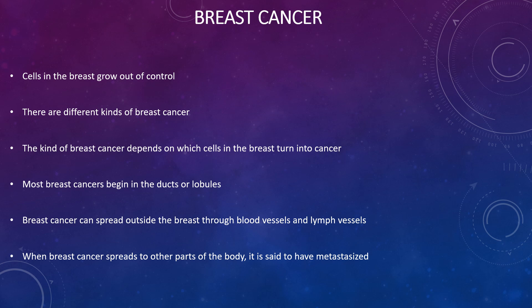Looking at breast cancer: cells in the breast grow out of control. There are different types of breast cancer depending on which cells in the breast turn cancerous. Most breast cancers begin in the ducts or lobules. Breast cancer can spread outside the breast through blood vessels and lymph vessels, and when it spreads to other parts of the body it is said to metastasize.